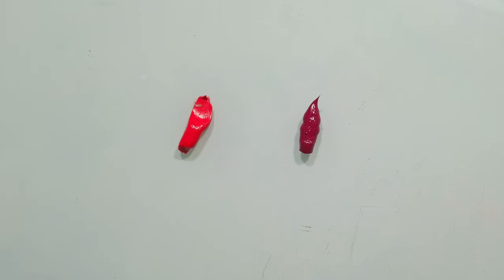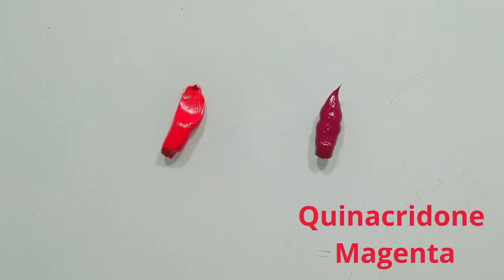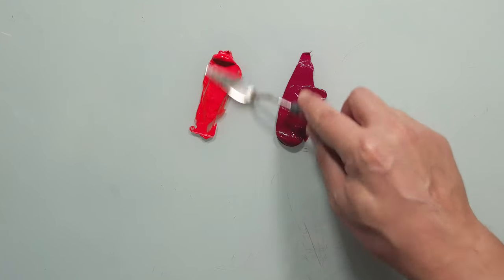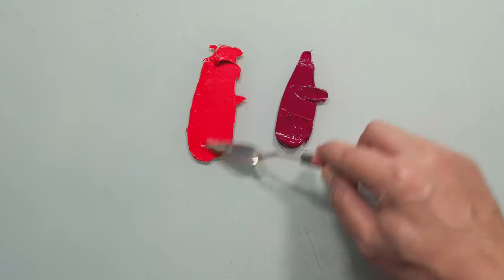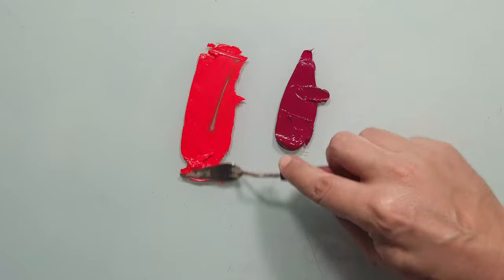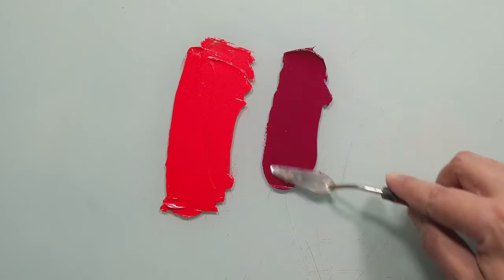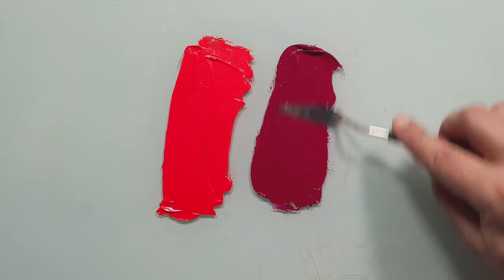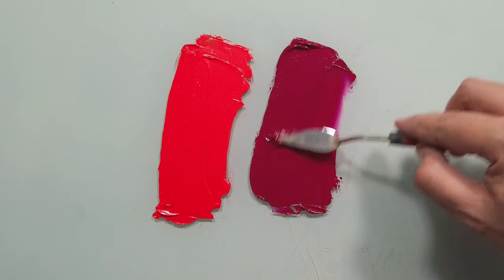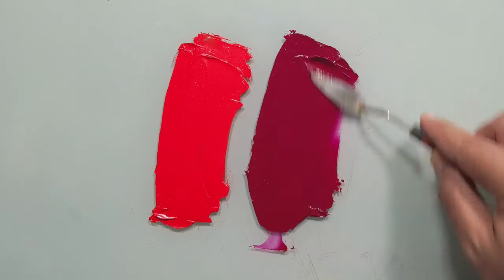Here I have Cadmium Red and Quinacridone Magenta. They are both red, but at the same time they are different. The Cadmium Red is a warm red. In contrast, the Quinacridone Magenta is a cool red. I want to show you how both colors behave when I mix them with other colors.